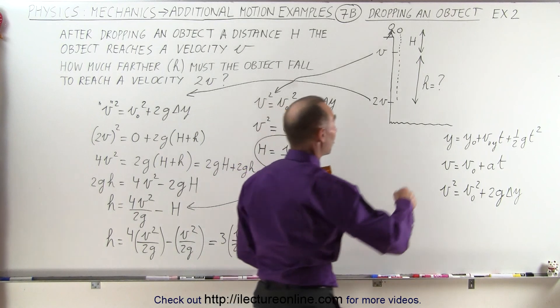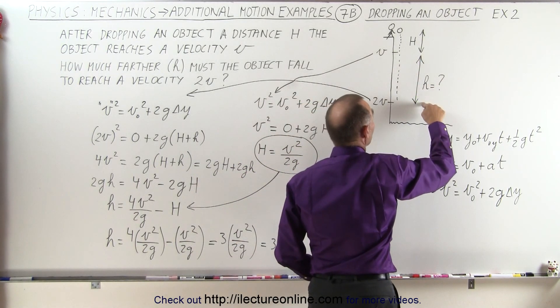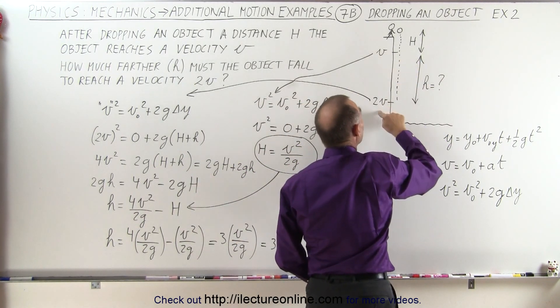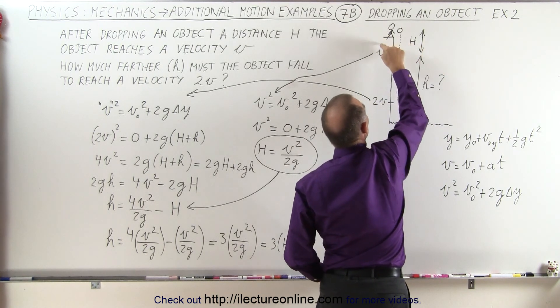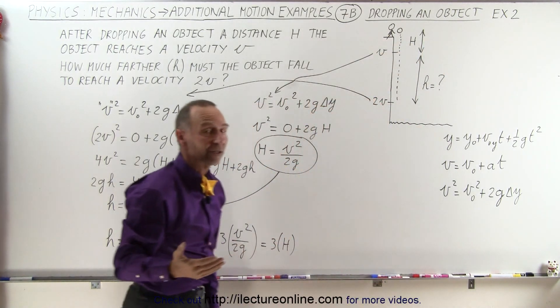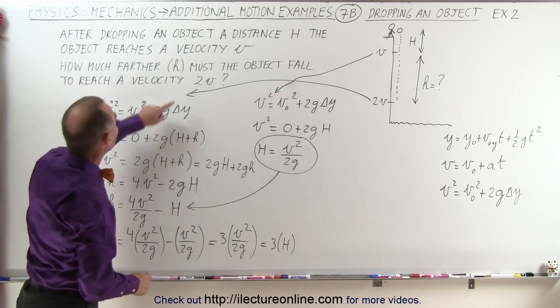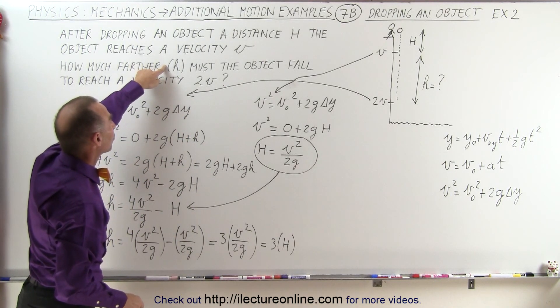In other words, you have to fall three times as far to go from v to 2v as you did to go from 0 to v. And the answer therefore is to reach the velocity of 2v, you must drop an additional distance h.